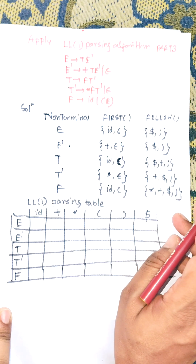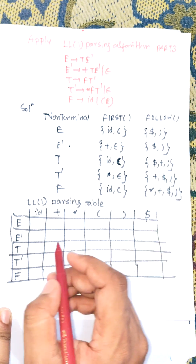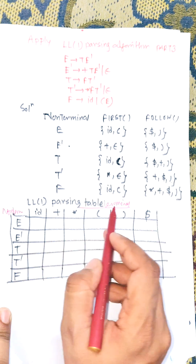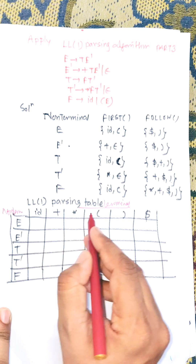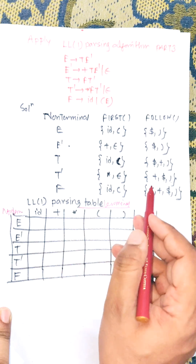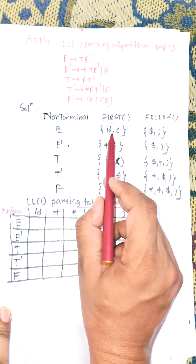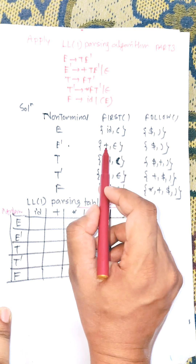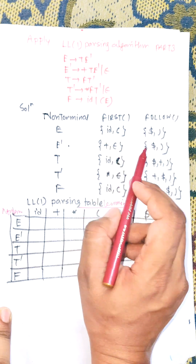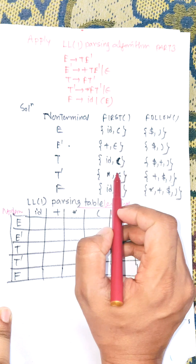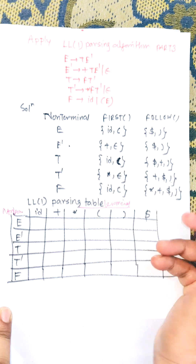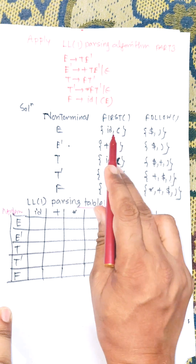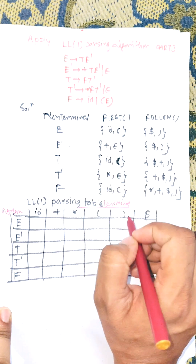First of all, we need to construct the LL(1) parsing table. The LL(1) parsing table consists of non-terminal and terminal symbols. The terminal symbols are: id, +, '(', *, and $. There is no need to include ε in the table.